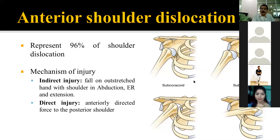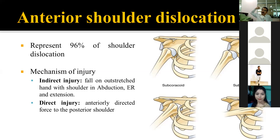The mechanism of injury is indirect — a fall on an outstretched hand with the shoulder in abduction and external rotation. This is a very vulnerable situation; for example, while throwing something heavy. Abduction combined with external rotation is a very precarious position for the shoulder joint where dislocation can occur even with trivial trauma.